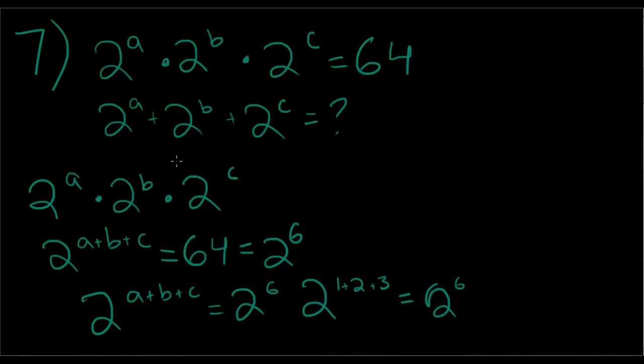So now we need to find 2 to the a plus 2 to the b plus 2 to the c. So let's just assume a is equal to 1, b is equal to 2, and c is equal to 3. So 2 plus 2 to the second, 2 squared plus 2 cubed, which is equal to 2 plus 4 plus 8, which is equal to 14, which is answer choice A.